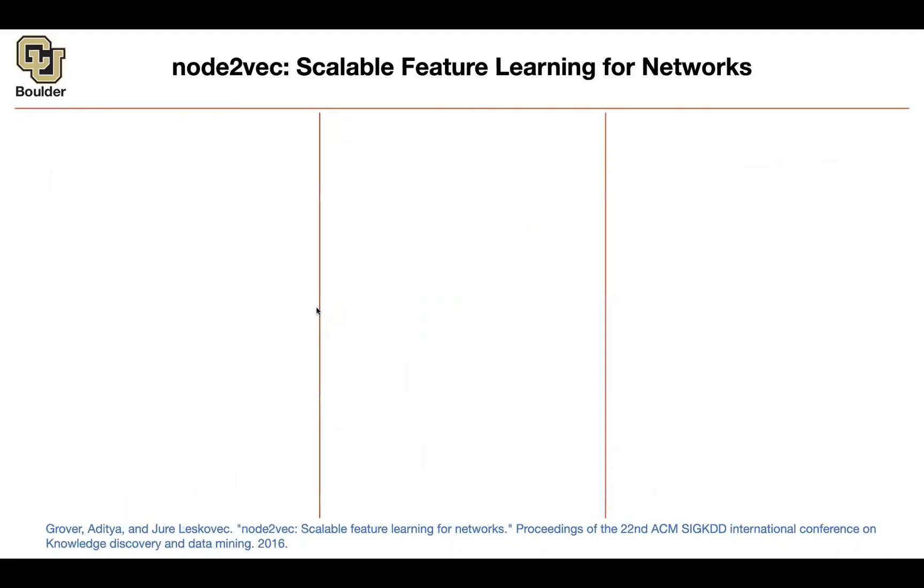The third one is also very similar. You want to turn your nodes to vectors. Somebody gives you a graph. You want to come up with your matrix. You have your source node, and there is a neighborhood around that node based on your edges and based on your sampling strategy.